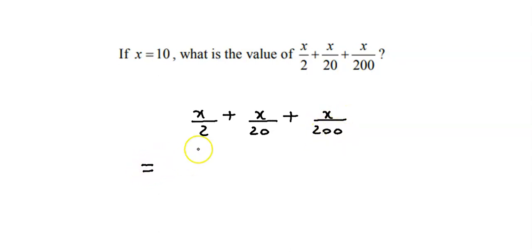Now what we could do here is we could equalize the denominator. We could convert this 2 into 200 by multiplying by 100 in the numerator as well as the denominator. So 2 times 100 becomes 200 and in the numerator it becomes 100x.